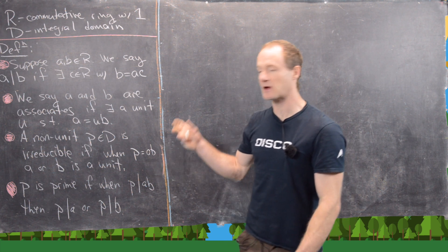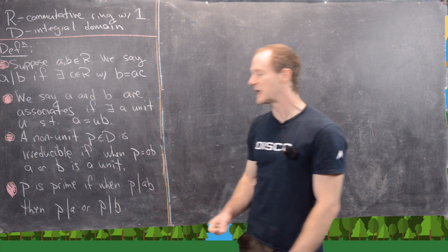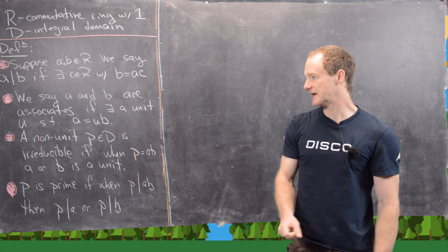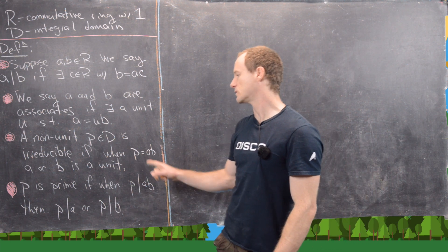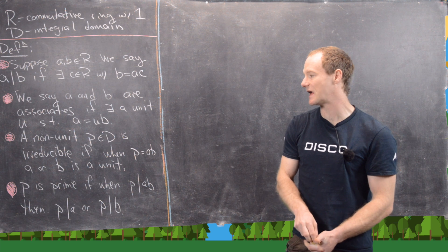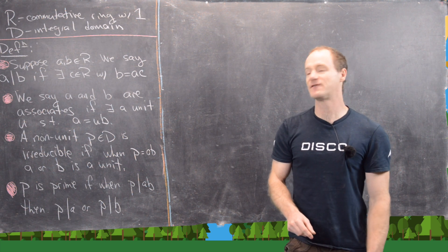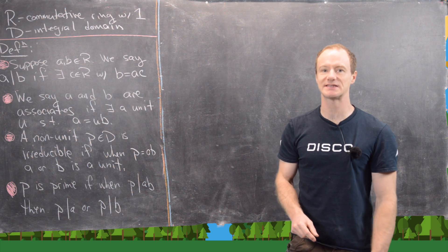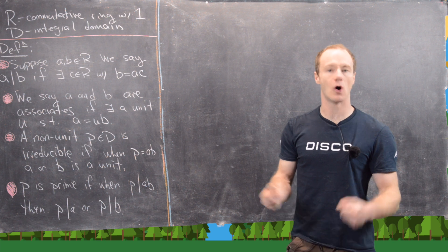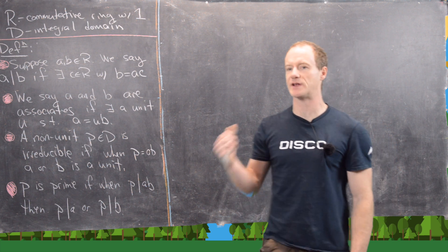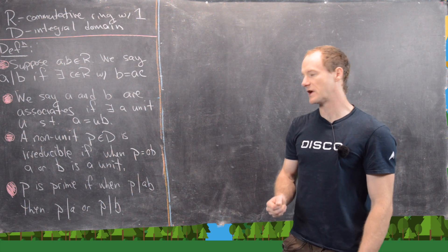Next we build up the notion of primeness. A non-unit P is said to be irreducible if whenever P equals AB, that tells you that A or B is a unit. For example, the number −5 is irreducible inside the integers, because the only way to factor it would be like −1 times 5, but −1 is a unit.